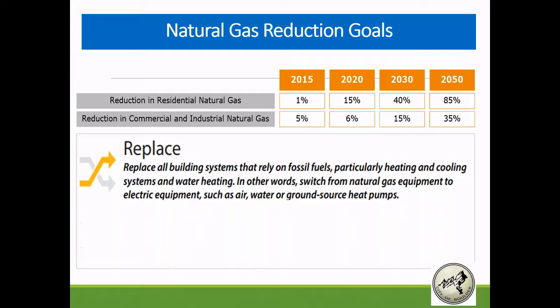We set natural gas reduction goals for our community in addition to our 80% greenhouse gas reduction goal. I'm focusing on residential today because it makes up the bulk of what we're trying to achieve. We're looking at having to get 85% of the natural gas out of our residential building stock by 2050.